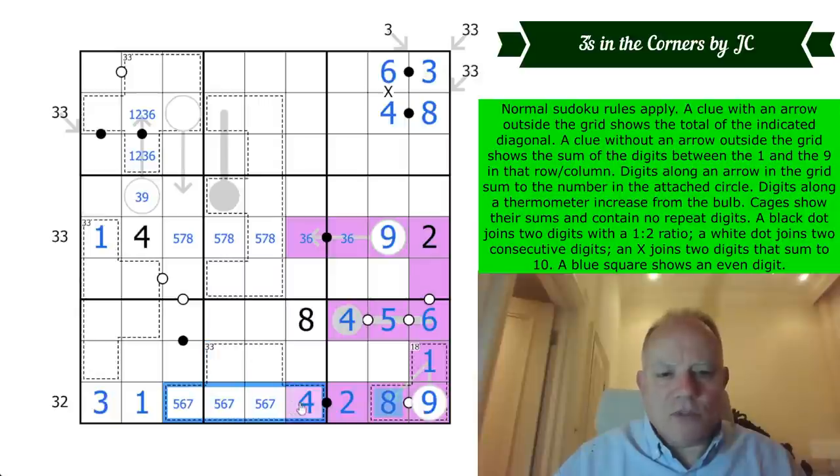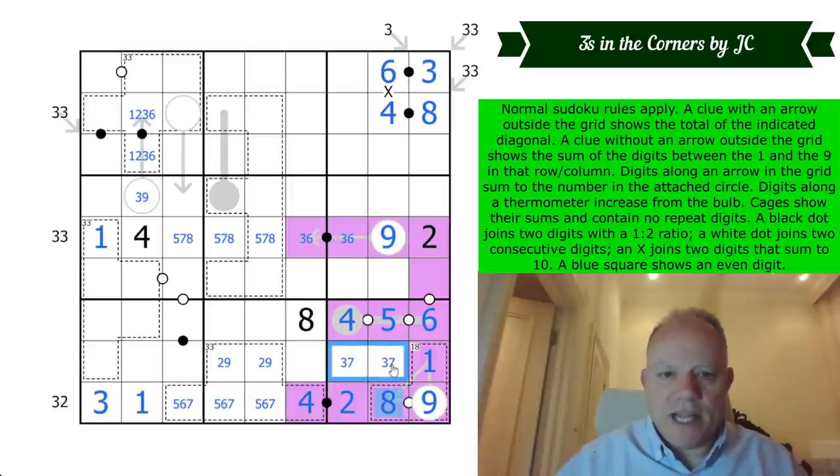Now in this 33 cage, we've got 22 already. So those two add up to 11. They can't be four, seven, or eight, three. They can't be five, six, or you'd have too many five, sixes and sevens in those cells. So it's a two, nine pair. This is a three, seven pair because it's all that's left in the box.